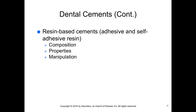Resin cements are basically modified composites used to bond ceramic and indirect restorations, conventional crowns and bridges, and to indirectly bond orthodontic brackets. Resin-based cements are available as light cured, dual cured, and self-cured. Traditional adhesive resin-based cements utilize the three-step etch, prime, and bond adhesive technique.